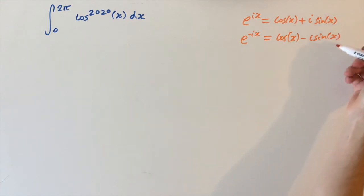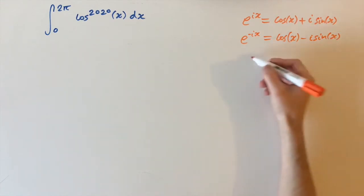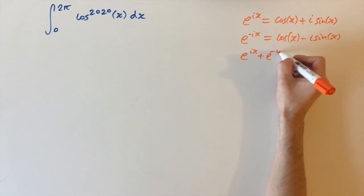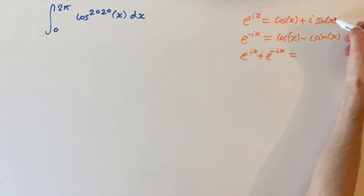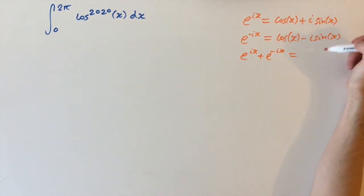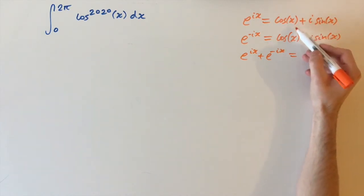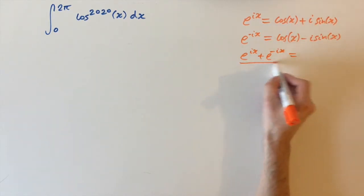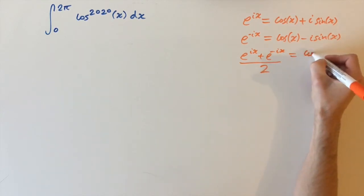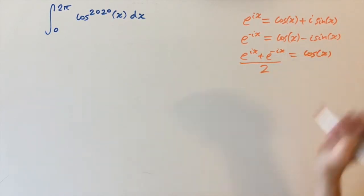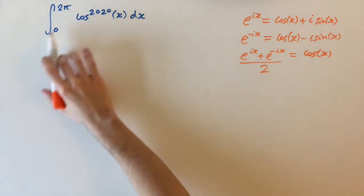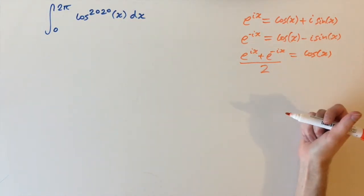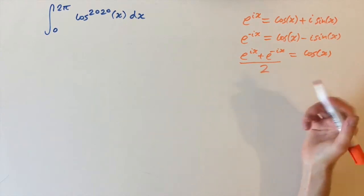We can add these two functions: e to the power of ix plus e to the power of minus ix. The i times sine of x terms cancel, leaving two factors of cosine of x. So dividing the left-hand side by two gives us cosine of x precisely. Although this integral is stated in the real domain, we're going to use complex numbers to get to something we can integrate.